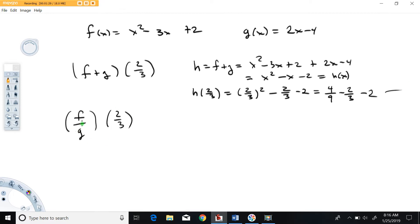So here we're going to look for f over g of two-thirds. So for starters let's calculate what is f over g. So f over g is x squared minus 3x plus 2 over 2x minus 4.